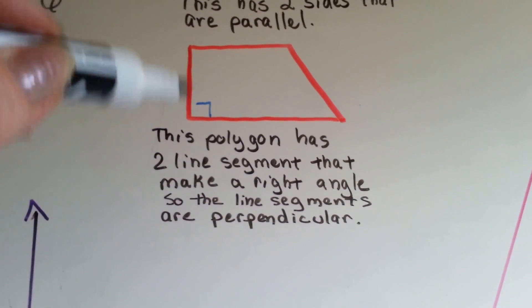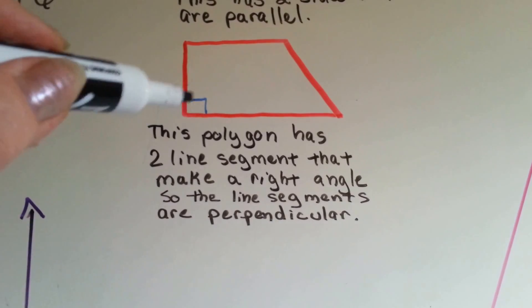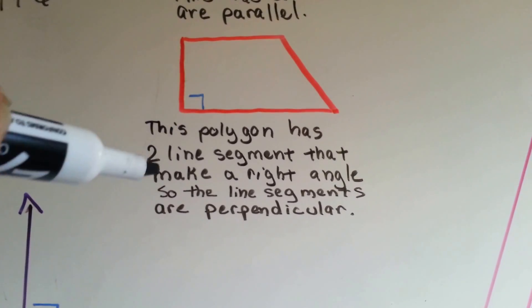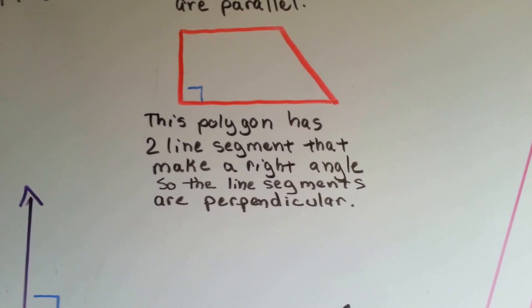It also has this line segment and this line segment that are making a right angle right here. So that means that this line segment and this line segment are perpendicular to each other.